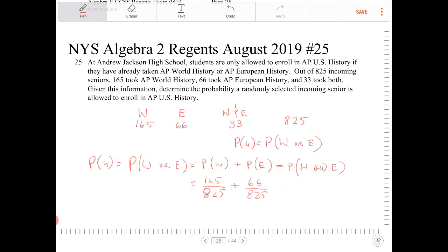And the probability of students who have taken European History is 66 over 825. And because there is an overlap, we have to subtract. So, and that would be 33 over 825.